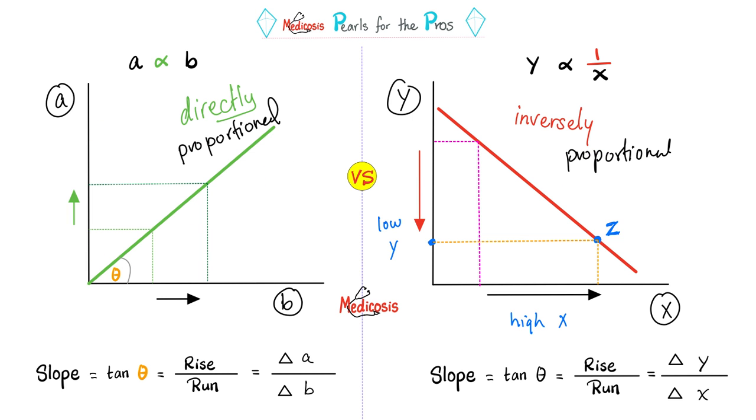Look at this. Between a and b, we have direct correlation. As b goes up, a goes up, and vice versa, which means the slope of this line is a positive number.